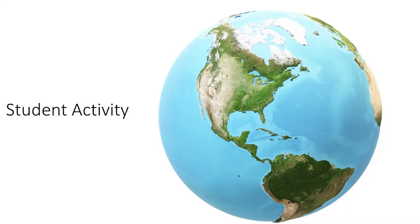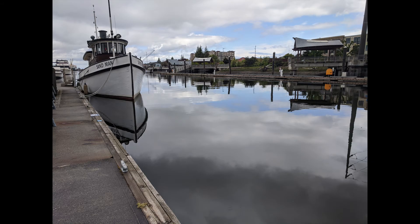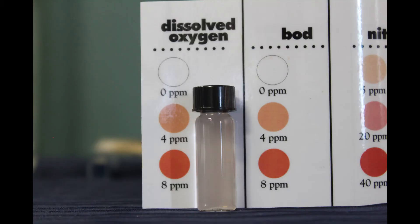Now we're going to review the water quality test results from a sample collected in Budd Inlet. The water quality sample was taken from the public dock in downtown Olympia. My best estimate is that the DO is between zero and four parts per million, so about two parts per million. This is poor dissolved oxygen saturation — the water sample has very little available oxygen for organisms to use. Water that is warm or has little movement can release oxygen into the atmosphere, causing a low DO result.